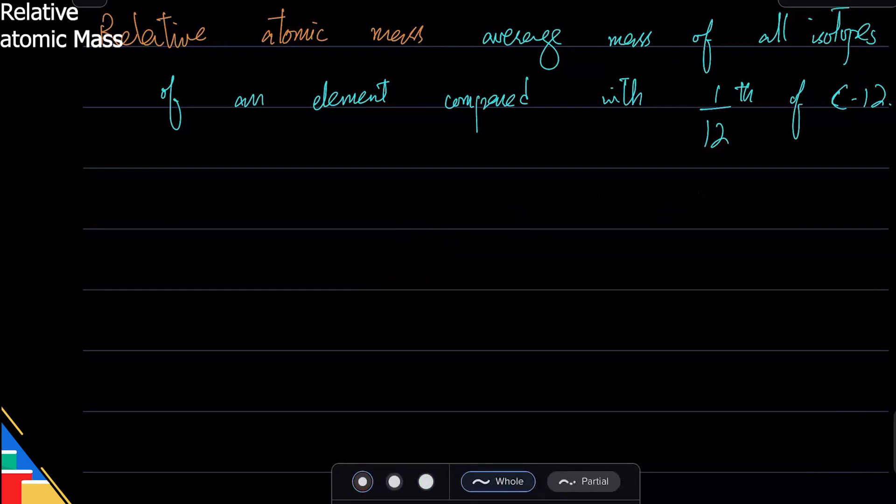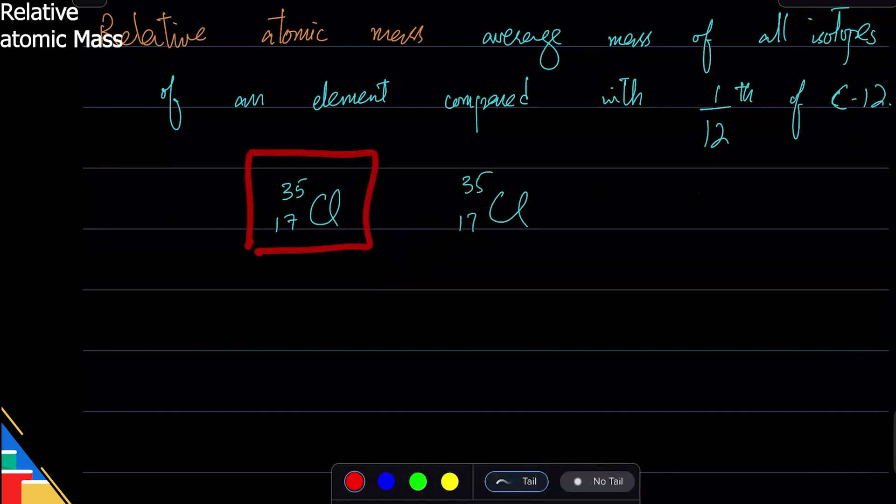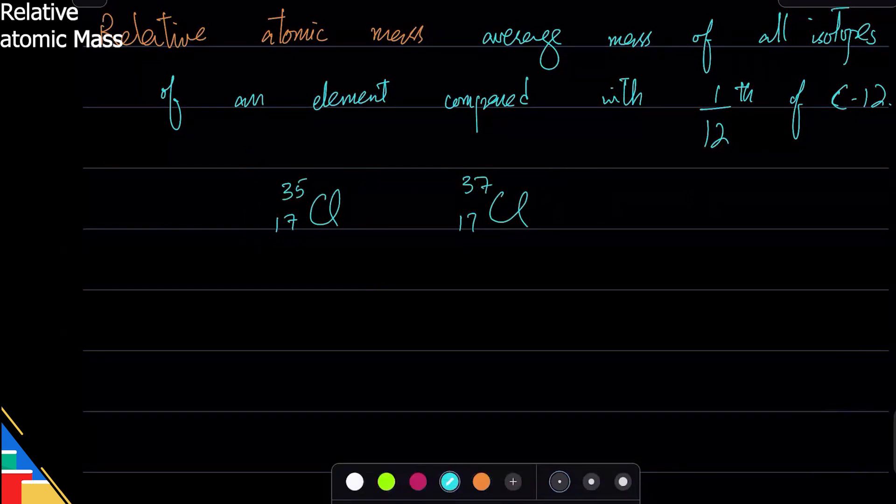Now how do we find this average? Really simple. You need to look at the isotopes. So I'm going to go with a very simple example of chlorine. Chlorine has two isotopes: chlorine-35 and chlorine-37. Notice how I named them. I call this one chlorine-35 because it is chlorine with 35 mass, and I call this one 37 because this is chlorine with 37 mass.